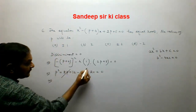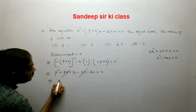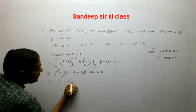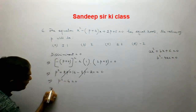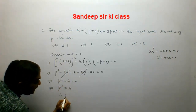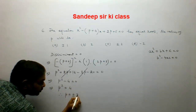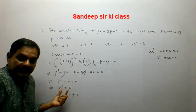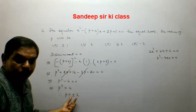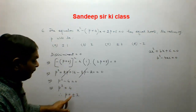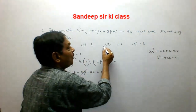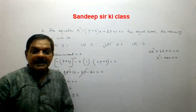Simplifying: the 8p terms cancel, giving p² - 4 = 0, so p² = 4, which gives p = ±2. Taking the square root of both sides yields the two values. So the value of p is ±2, and option C is the correct answer.